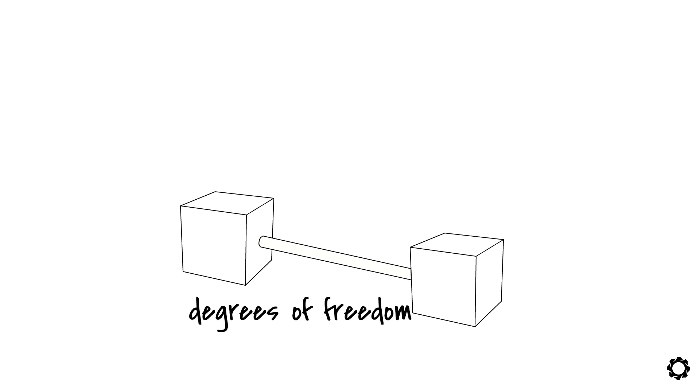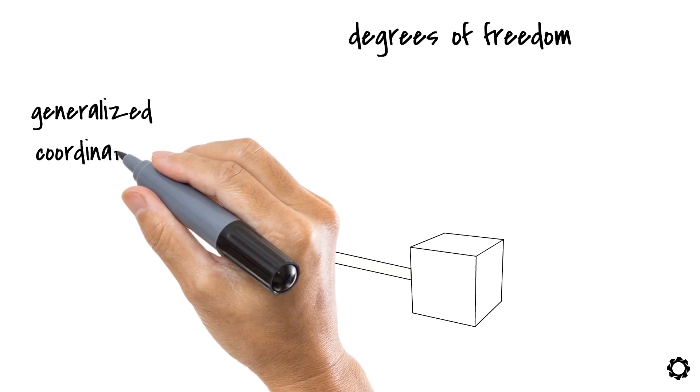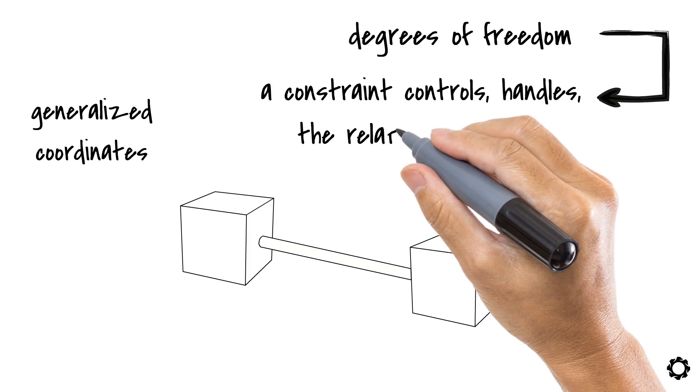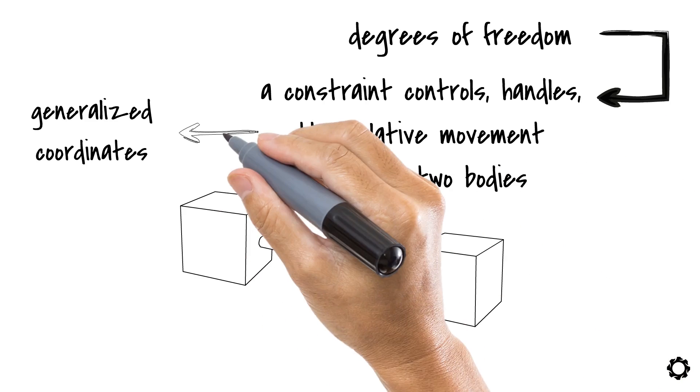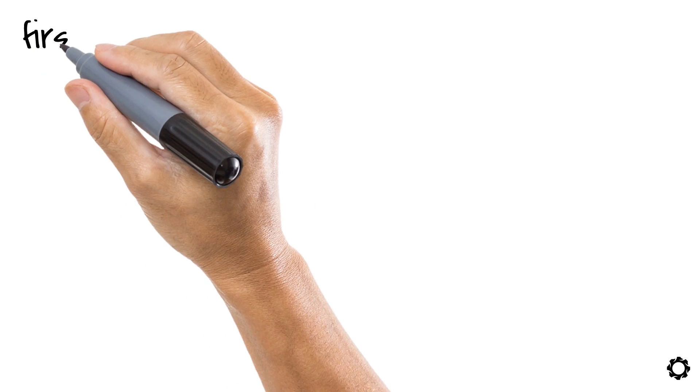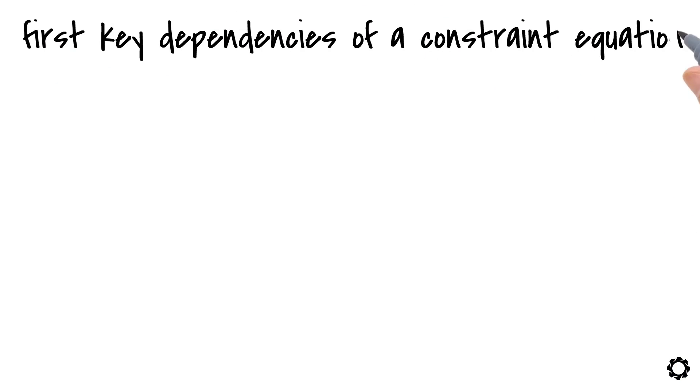Knowing that I describe degrees of freedom using generalized coordinates, then it would be similar to say that a constraint controls, handles, the relative movement between two bodies by considering which generalized coordinates are available to it to do the job. We intuitively found the first key dependencies of the constraint equation. That is, a constraint equation depends on the generalized coordinates used to create the model.